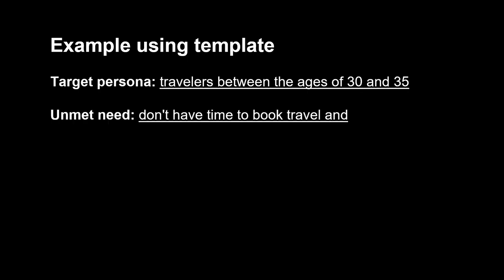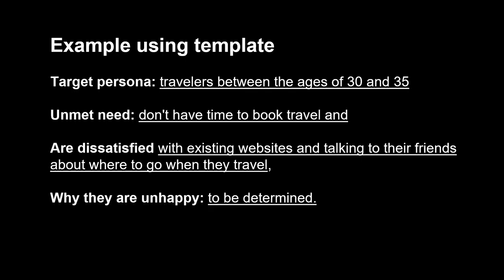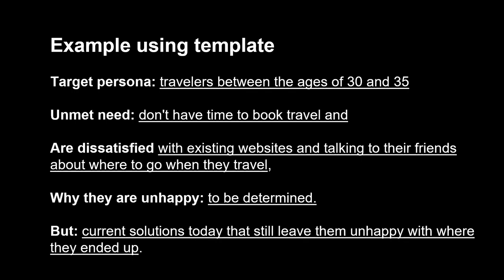Going back to the travel example, it could be: we believe that a traveler between the ages of 30 and 35 doesn't have time to book travel. They're dissatisfied with existing websites and talking to their friends about where to go when they travel.